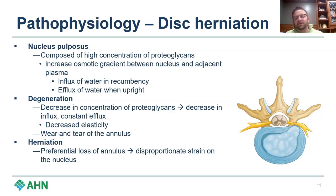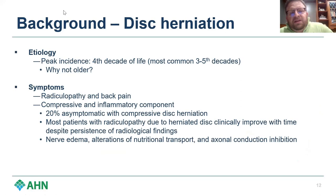This degeneration ultimately leads to decreased elasticity and wear and tear of the annulus over time. Herniation is secondary to preferential loss of the annulus with a disproportionate strain on the nucleus, leading to herniation of the nucleus out of the annulus.